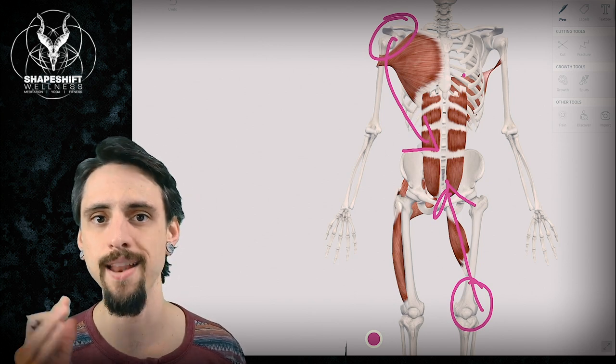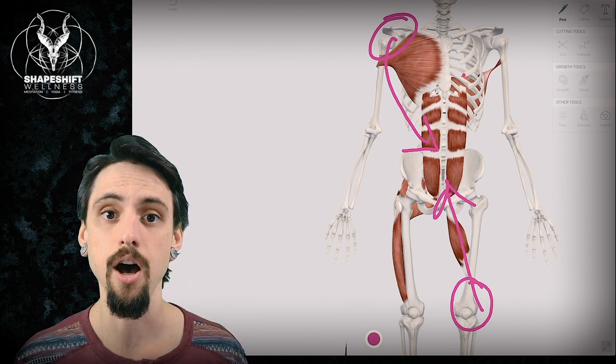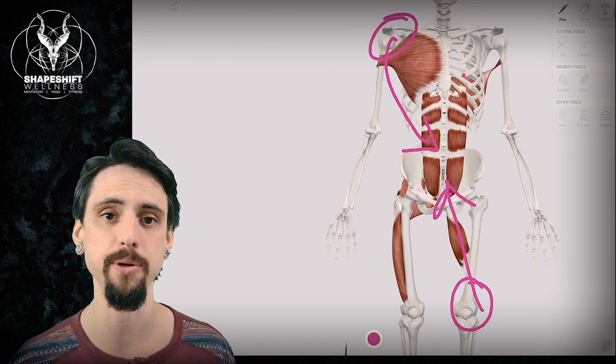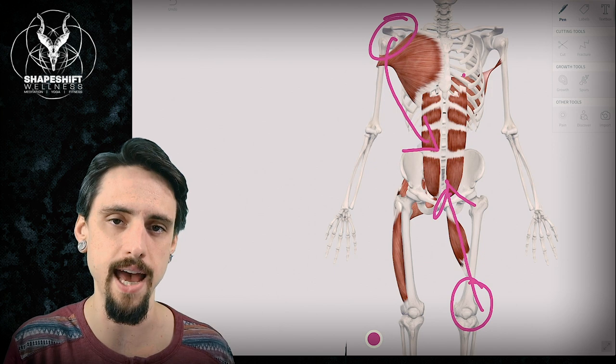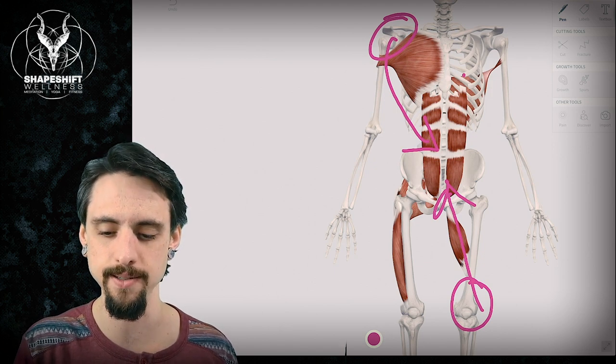So the front functional line and the back functional line both work at the same time on opposite sides of the body to accomplish the exact same task. So let's revisit that through our pitcher example and then we'll get to the yoga example.